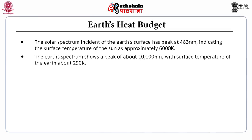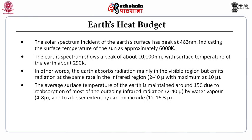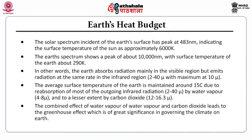The Earth's spectrum shows a peak of about 10,000 nanometers with a surface temperature of the Earth of about 290 Kelvin. In other words, the Earth absorbs radiation mainly in the visible region but emits radiation at the same rate in the infrared region, that is 2 to 40 micrometers with a maximum at 10 micrometers. The average surface temperature of the Earth is maintained around 15 degrees Celsius due to reabsorption of outgoing infrared radiation by water vapor and, to a lesser extent, by carbon dioxide. The combined effect of water vapor and carbon dioxide leads to the greenhouse effect.